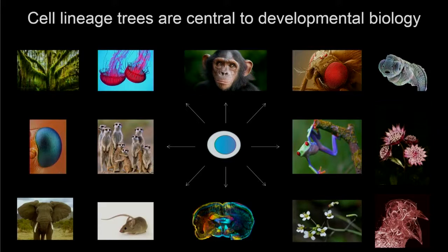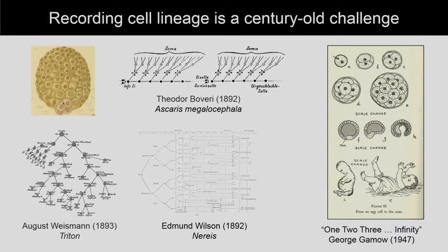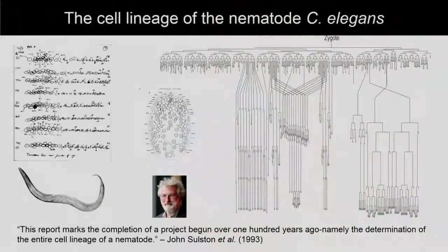The idea of trying to understand cell lineage and to map it is a very old one, going back over a hundred years to early studies from August Weismann and Wilson and others, largely based on visual observation. Working on worms where you could actually see what was going on ultimately gave rise roughly a hundred years later to the only multicellular organism for which we have a complete map of development — C. elegans — famously deciphered by John Sulston through visual observation over several years, recording things with pen and paper.